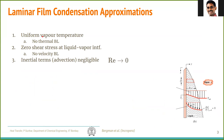Let us look at a model for heat transfer in film condensation, and the important approximations that are made. Firstly, the vapor phase is at a uniform temperature — it is everywhere at the saturation temperature T_sat, and the surface is at T_s. Because of this, we assume there is no boundary layer. The temperature simply goes from T_s to T_sat over a distance delta. Note that delta is the film thickness and not the boundary layer.